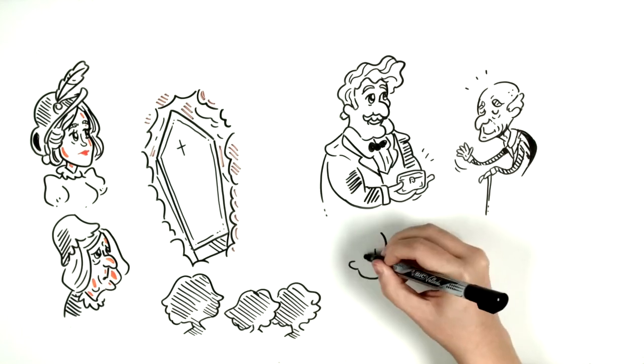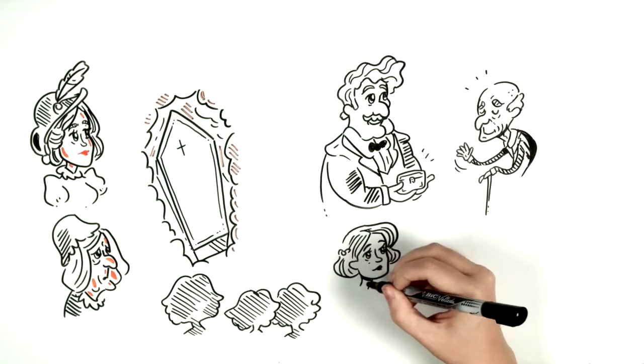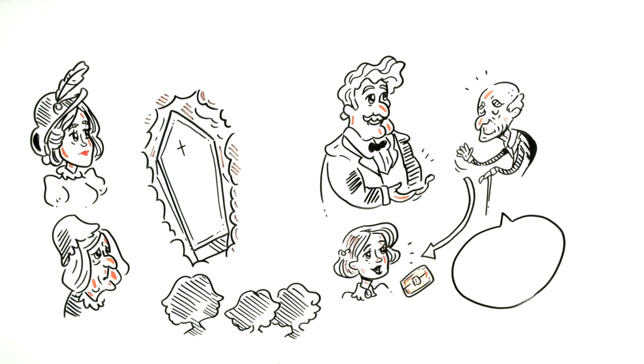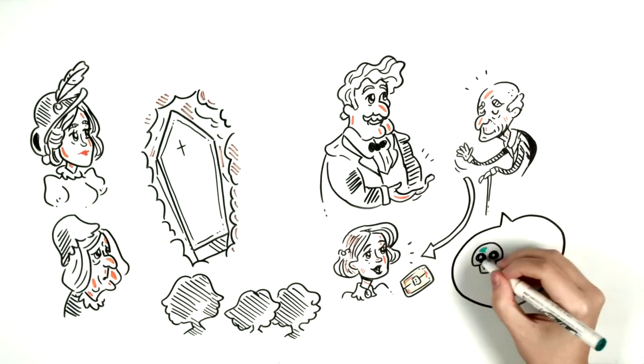But Lord Canterville told him that was no problem. Virginia had done his family a great service and deserved to have the jewelry. He reminded Mr. Otis that he had bought a house with the ghost, including all the belongings.